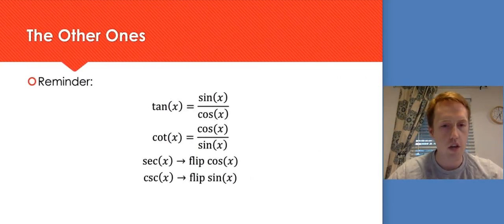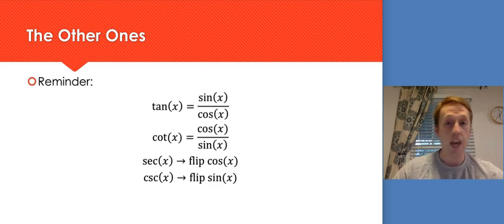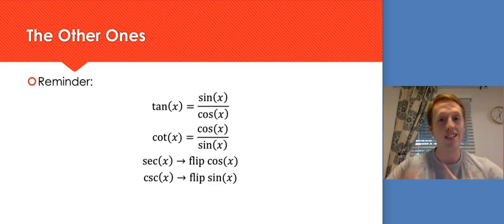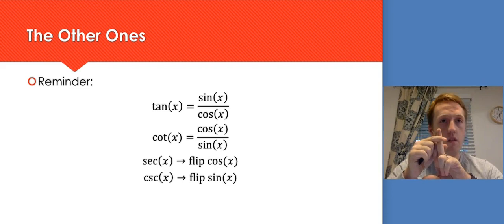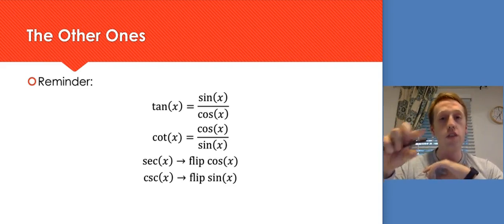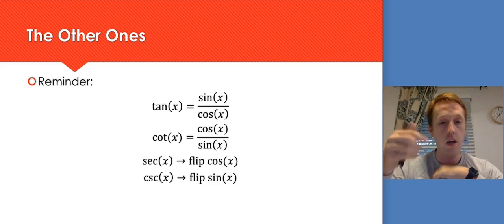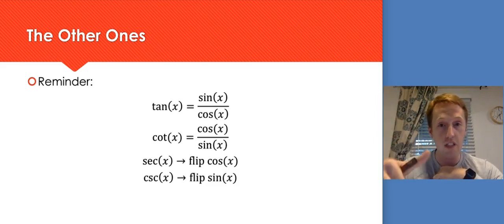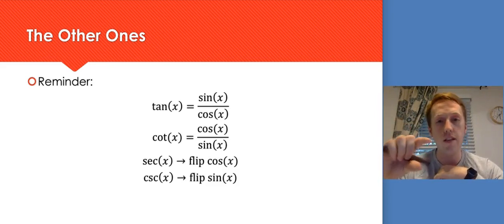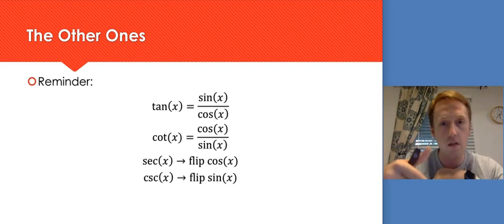Now I'll do a couple involving tangent, cotangent, secant, and cosecant. Tangent means take sine over cosine. Cotangent is the opposite — cosine over sine. Secant means find cosine and flip it. Cosecant means find sine and flip it.